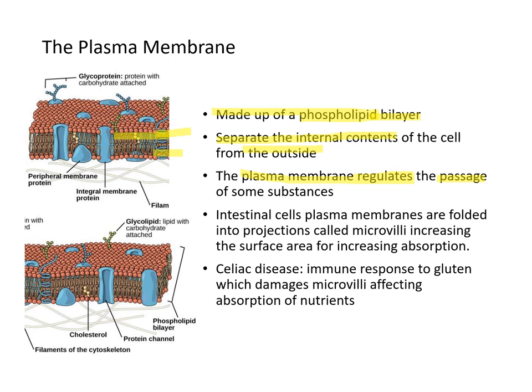Intestinal cells in particular have plasma membranes that are folded into thin projections called microvilli. This increases the surface area in the intestine for greater absorption. Celiac disease is an immune response to gluten and is caused by damage done to these microvilli, which affects how nutrients are absorbed.